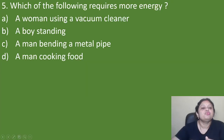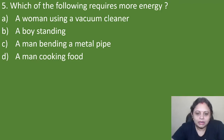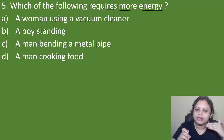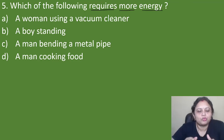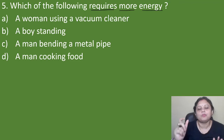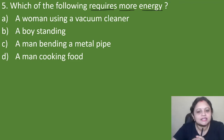Next question: which of the following requires more energy? Option A: a woman using a vacuum cleaner, B: a boy standing, C: a man bending a metal pipe, D: a man cooking food. When someone is bending a metal pipe, of course we need a lot of energy. The correct answer is option C — a man bending a metal pipe.